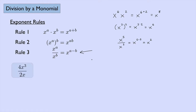Let's look at an easy example. Suppose we have four x cubed divided by two x. We look at like terms: four divided by two is two. Then x cubed divided by x — think of x as x to the first power — gives x to the three minus one power, which is x squared. So the answer is two x squared.